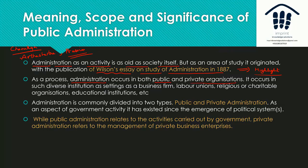As a process, administration occurs in public as well as private settings. It occurs in business firms, labor unions, religious and charitable organizations — even in pressure groups. Administration is divided into two types: public and private. In simple terms, public administration relates to activities carried out by the government, while private administration refers to the management of private business enterprises.